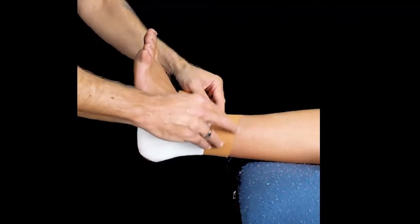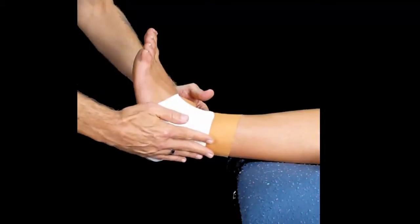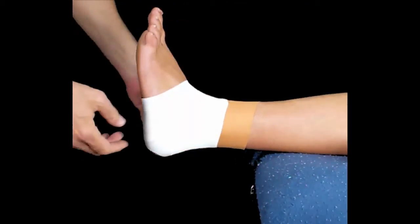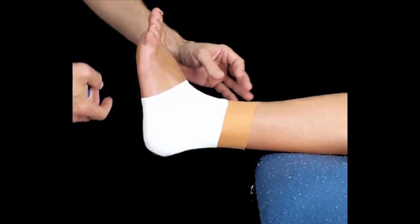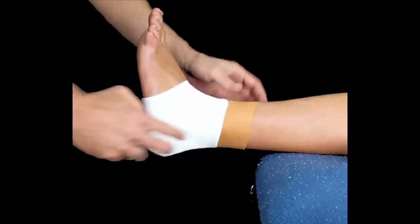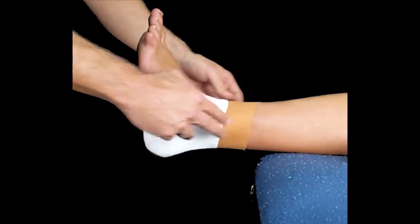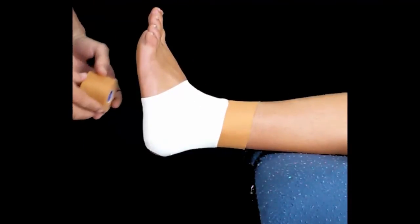This not only makes the tape sit flush with the skin, but it also helps once you're running around and the muscles fill with blood, as it can become quite uncomfortable and cut in. Putting it at this angle reduces the chance of cutting in and making it feel uncomfortable.